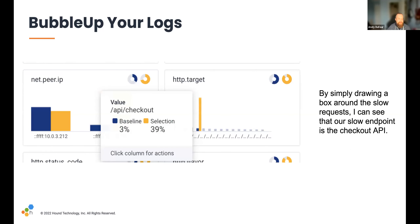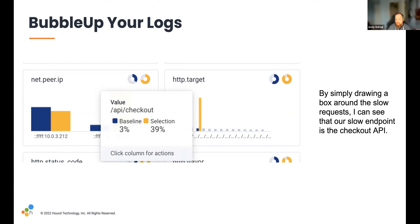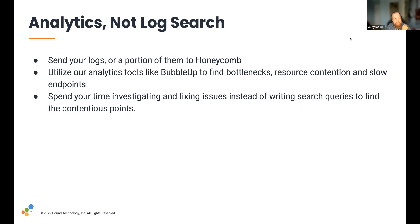This one's from our demo environment — I drew a box around the slow requests, and this is very clearly showing: we have one slow endpoint. It is the checkout endpoint, and it's responsible for the slow requests in the box I drew. This came back in three seconds in our demo environment after drawing a BubbleUp box around those slow requests, and we got our answer: what endpoint is slow? It's API checkout. That could be accomplished in 30 seconds to a minute if you needed to.